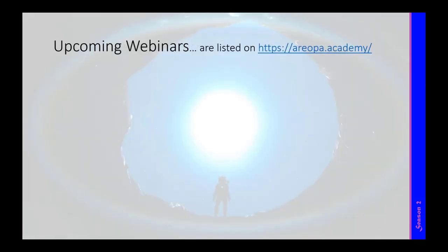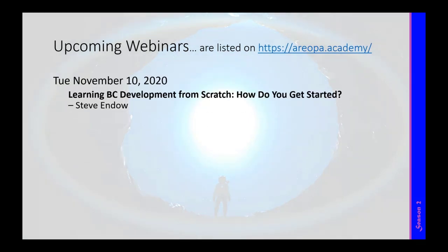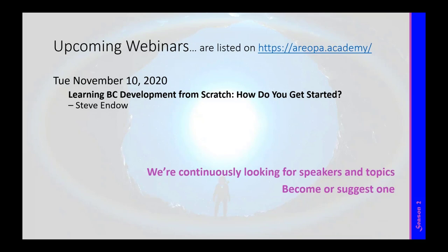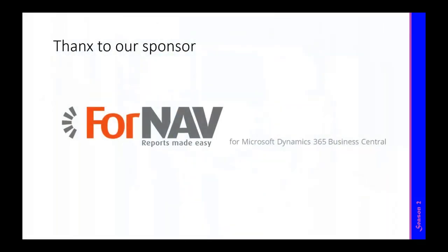Maybe you could help us get to the next stage of 400 subscriptions. We had 393 subscribers already on Twitter and we want to get to 400. If you want to be in the know, there's a link to our newsletter subscription page. We will have more webinars in the coming weeks. In three weeks time we will have Steve Andow, who's going to talk about how he got started with BC development from scratch, coming from Great Plains. Thanks also to our sponsor, which enables us every time to go online and use GoToWebinar.